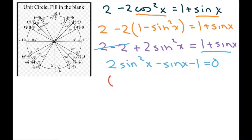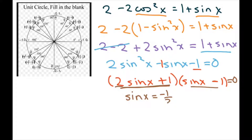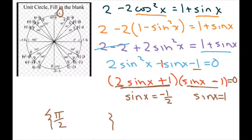Now we factor: (2 sine of x plus 1)(sine of x minus 1) equals zero. Setting each piece to zero: from the first factor, sine of x equals negative 1/2, and from the second, sine of x equals 1. Sine equals 1 at pi over 2. Sine equals negative 1/2 at 7 pi over 6 and 11 pi over 6. So those are our three solutions.